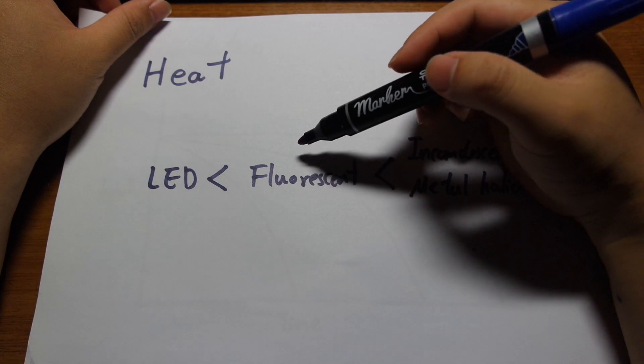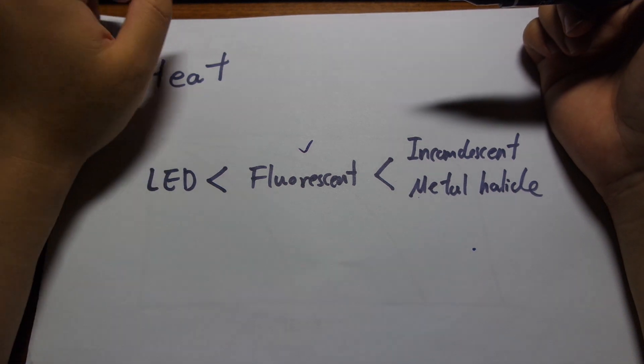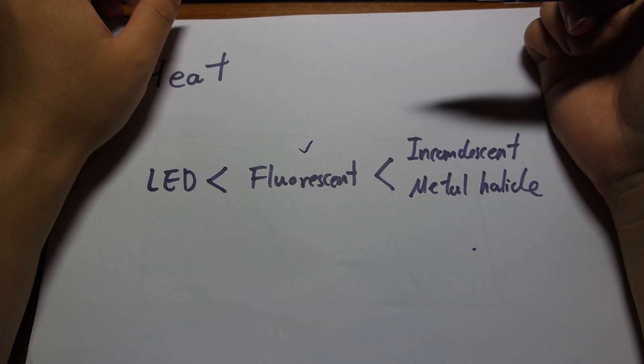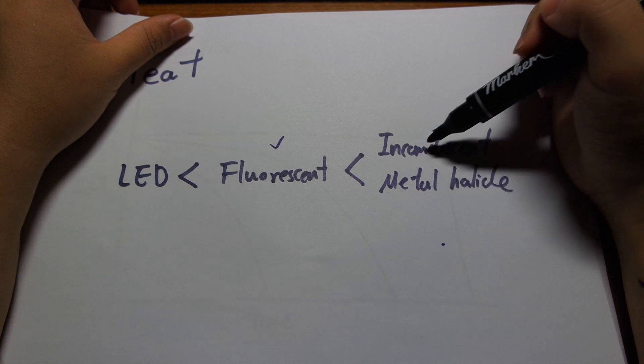So the second is fluorescent. They produce not as much heat as other light bulbs, but they still produce a quite significant amount. And the ones that produce lots of heat will be the incandescent and metal halides. They produce tons of heat.